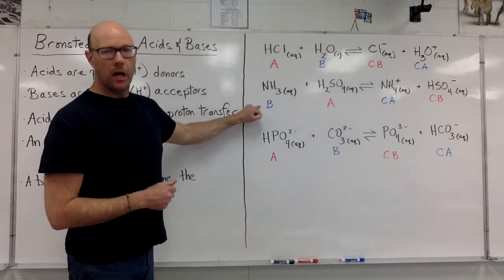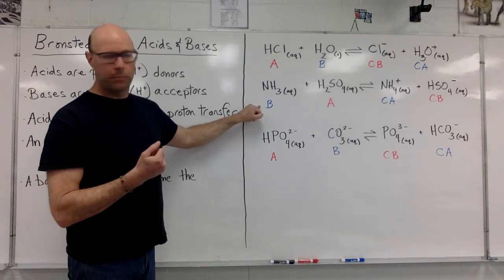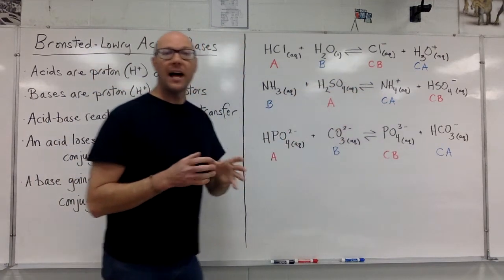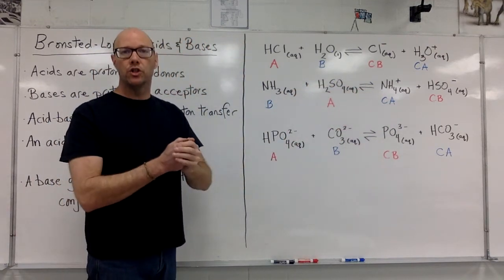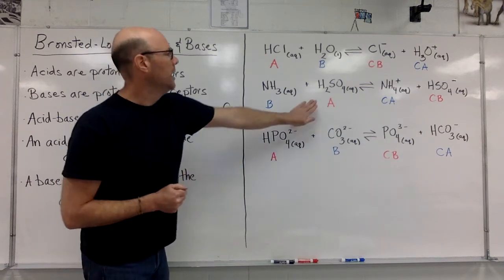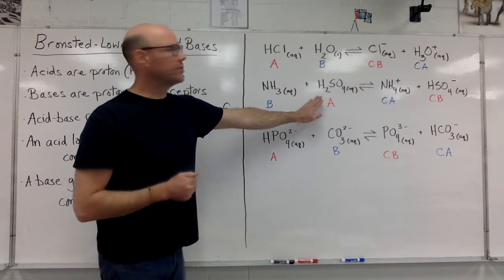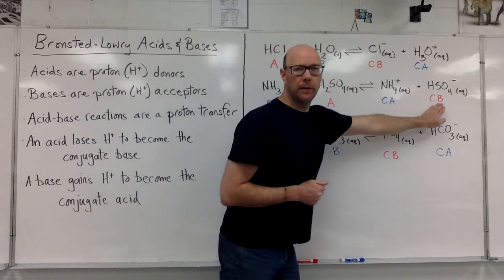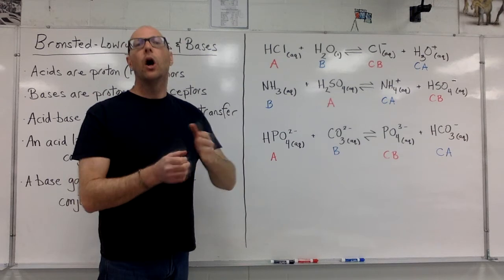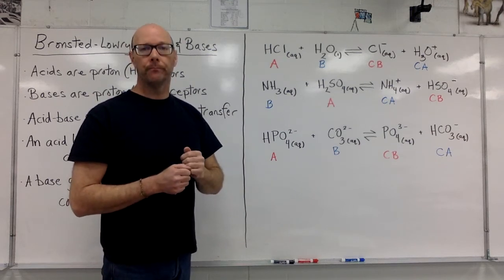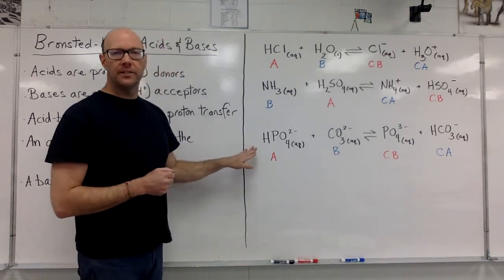The base, ammonia, gained an H+ to become the conjugate acid. That's a pair. The base and conjugate acid are a pair. The acid lost a proton, lost that H+, to become the conjugate base. The acid and conjugate base are, likewise, a pair.